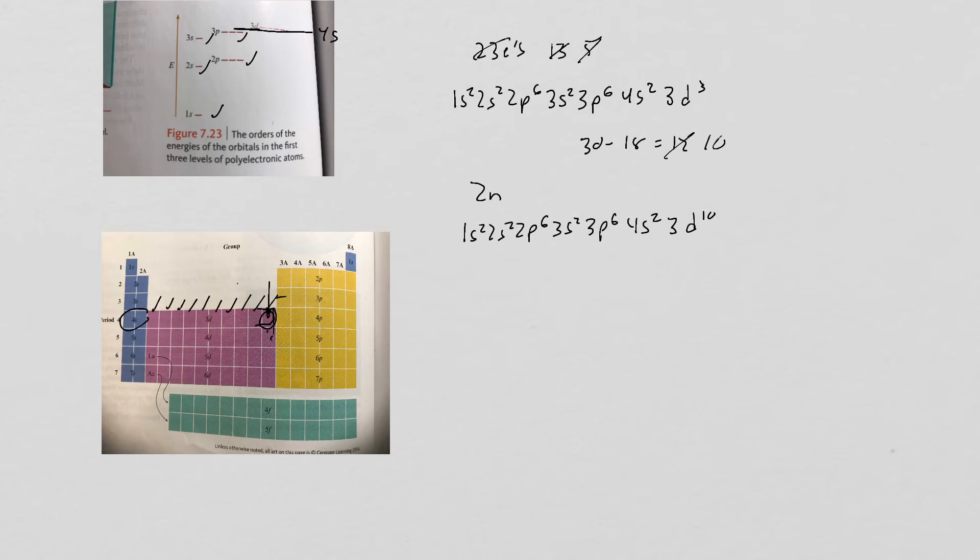Now, if I had to do the next element over, gallium, it would be the exact same electron configuration, but I have one more. So you go back to this. It's going to end up with everything. Everything in this column is going to end in p1. Everything in this column is going to end in p2. So gallium: 1s2, 2s2, 2p6, 3s2, 3p6, 4s2, 3d10. That's 30 electrons, but gallium has 31. Where does the next electron go? Right here, 4p1.